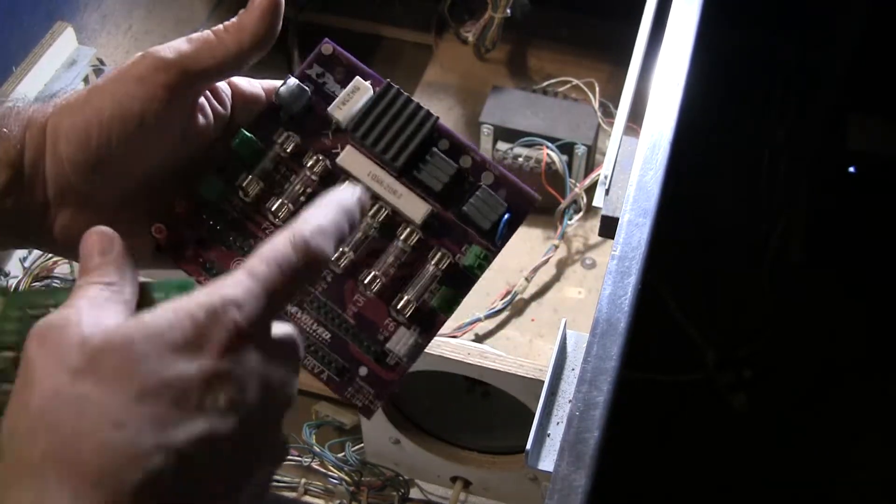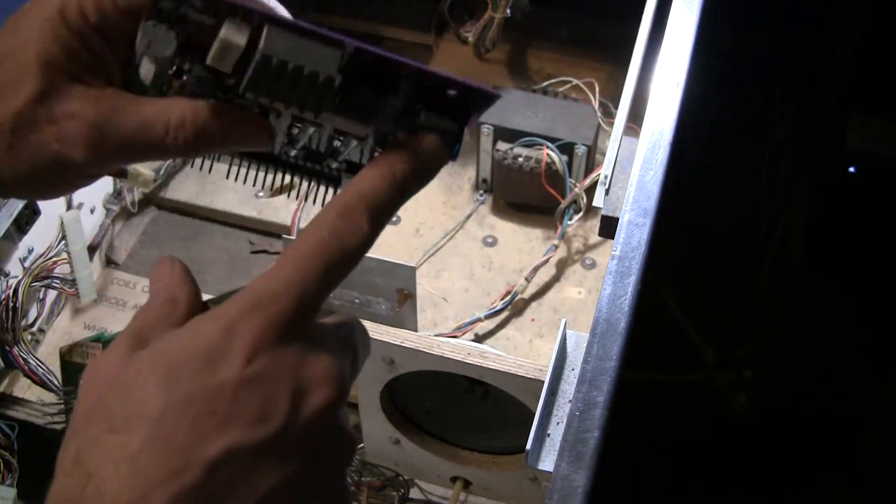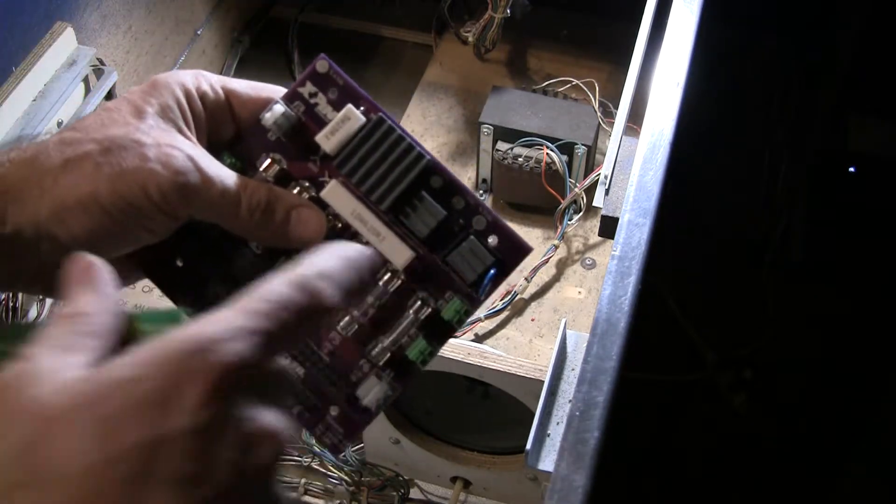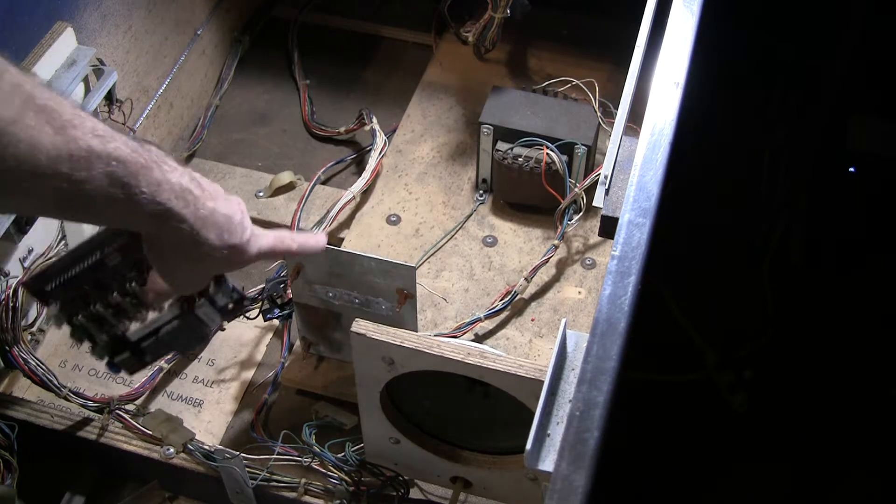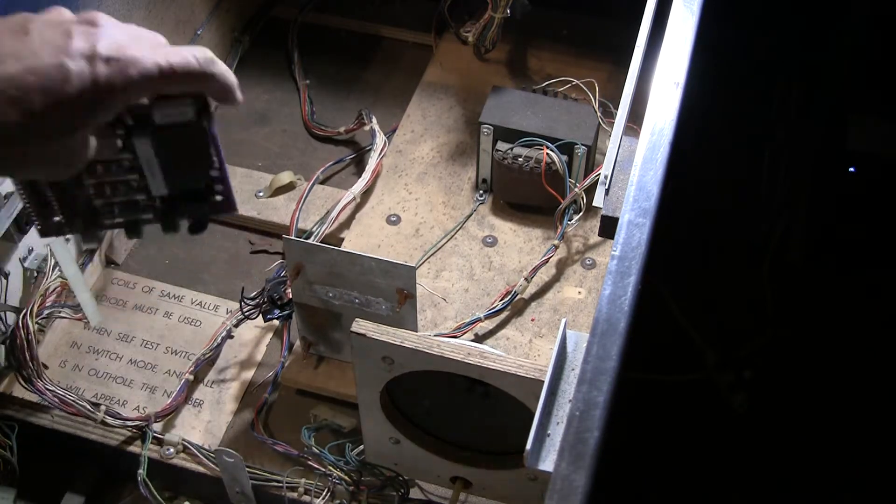This has heat sinks on the bridge rectifiers already, so it doesn't necessarily have to be screwed to this back plane which was used as a heat sink for these earlier models.